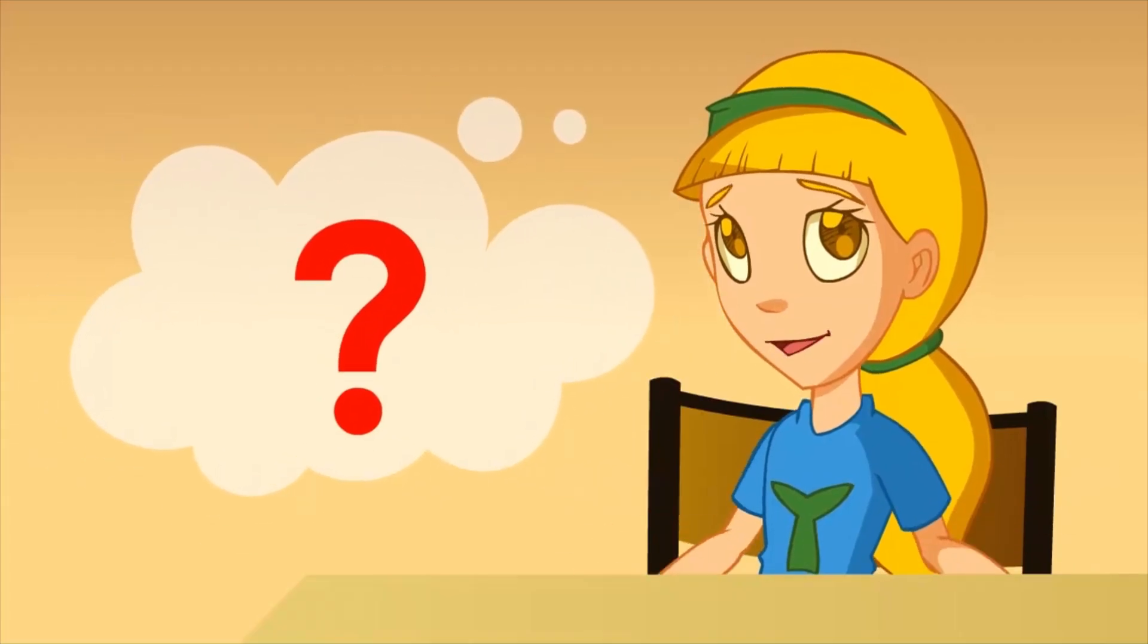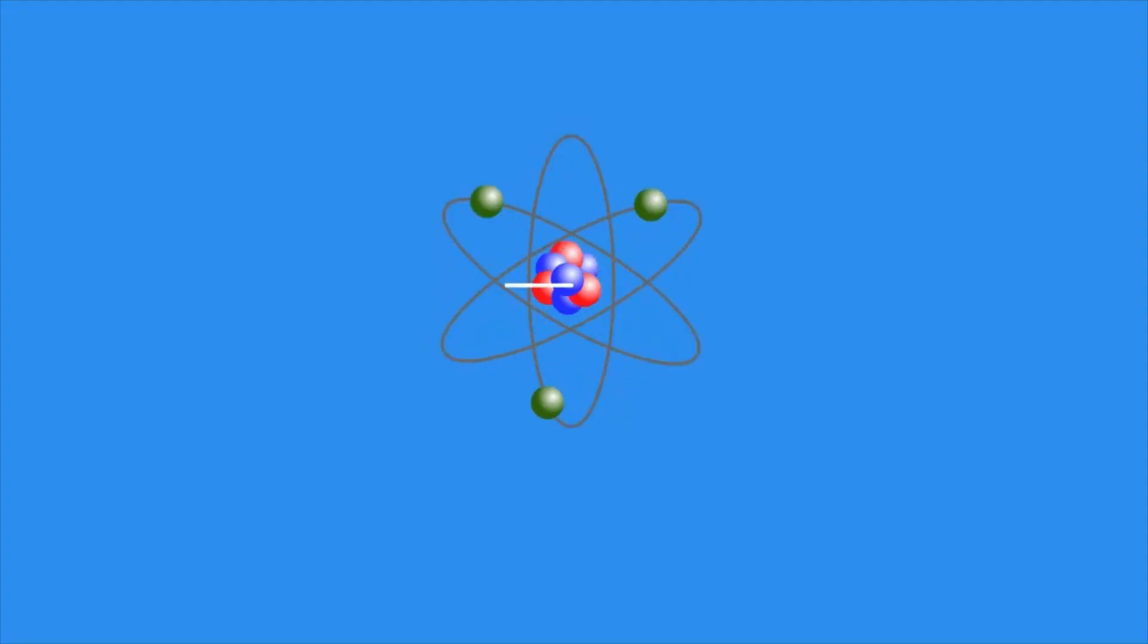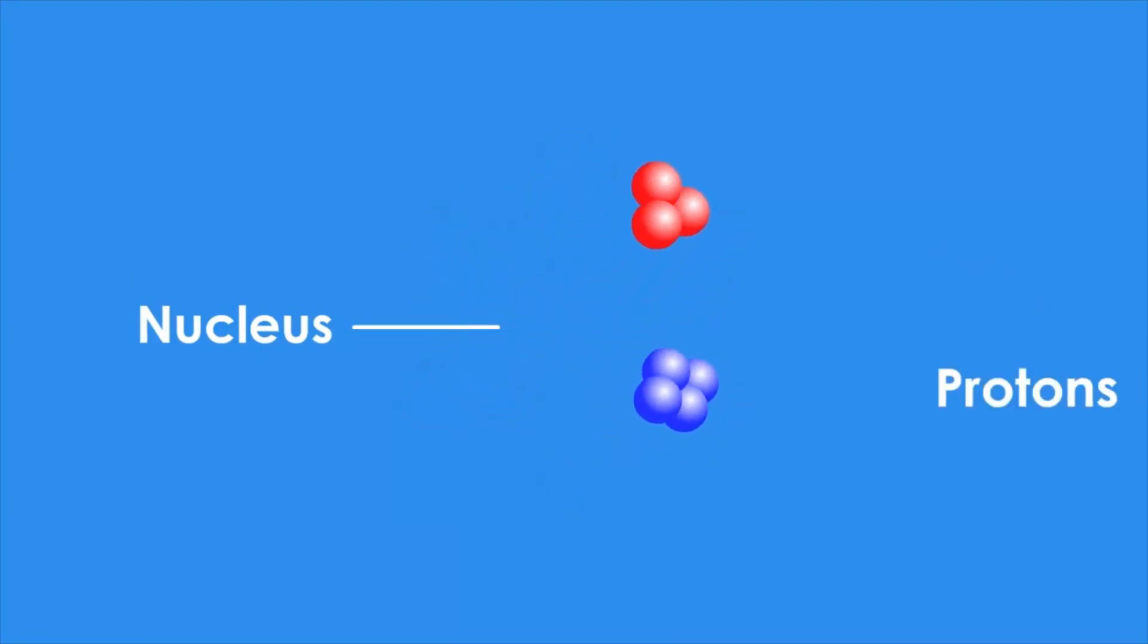What particles make up an atom? Atoms are formed by a nucleus and some particles that are permanently around it which are called electrons. Inside the nucleus each atom has a number of other particles called protons and neutrons.